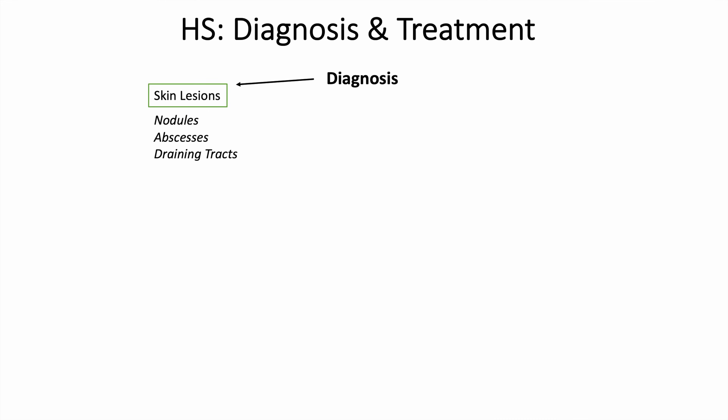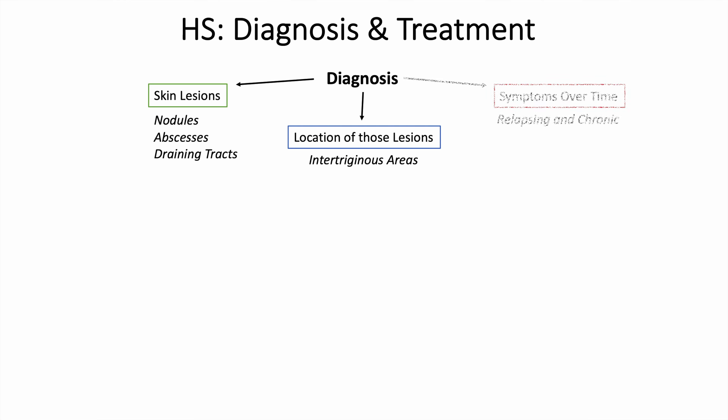To make the diagnosis of hidradenitis suppurativa, we look at a few things: the skin lesions themselves — are they nodules, abscesses, or draining tracts? — and the location of those lesions in intertriginous areas. We also look at the symptoms over time: do these skin lesions relapse and are they chronic and recurrent? Looking at these three categories — lesion type, location, and symptoms over time — helps us make the diagnosis.